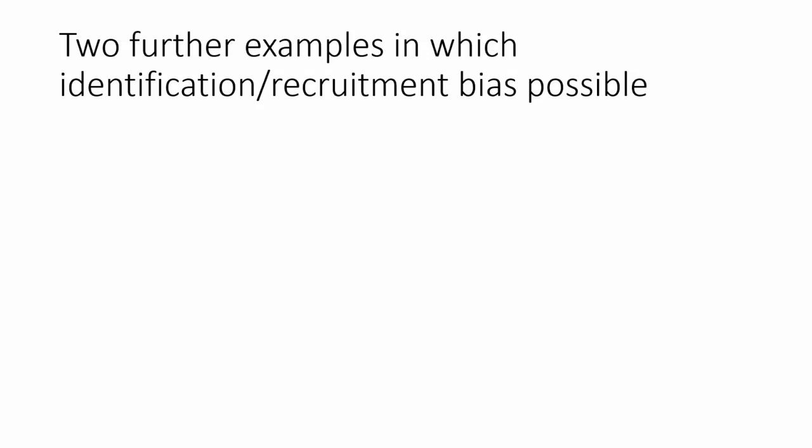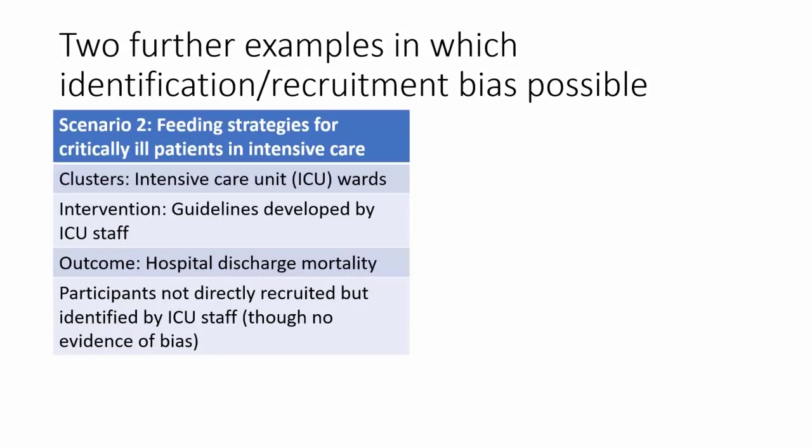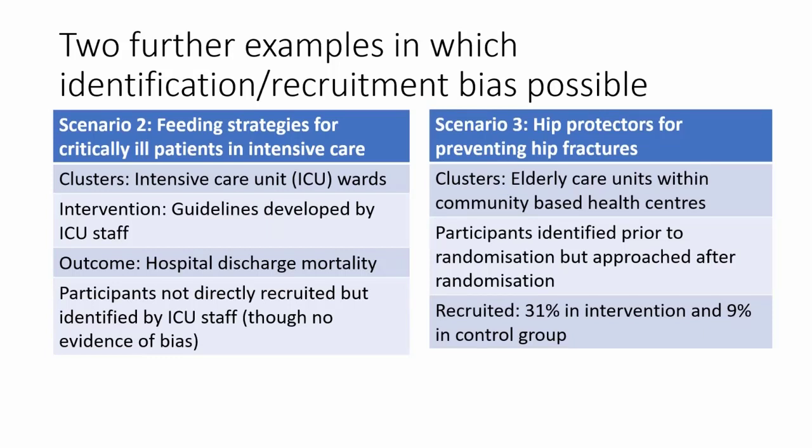For scenario two, an example is a trial in ICU where patients were not directly recruited but were identified by ICU staff who knew whether they were in the intervention or control group — because in the intervention group they had helped to deliver the guidelines being used. There wasn't any evidence of bias, but there was a possibility. For scenario three — the hip fracture trial — participants were identified prior to randomisation of clusters, but approached about recruitment after randomisation. The same issue arose: 31% were recruited in the intervention group and only 9% in the control group.